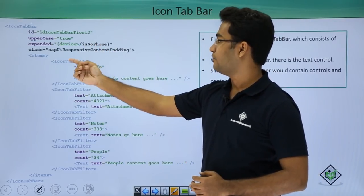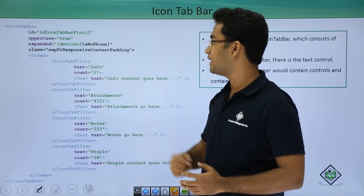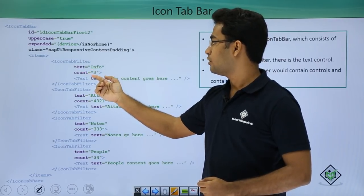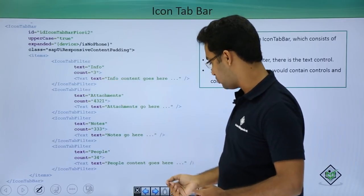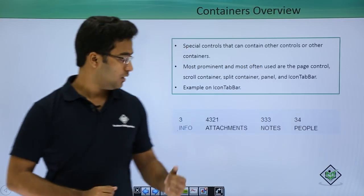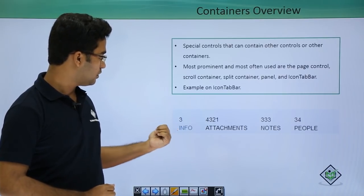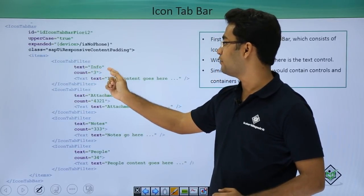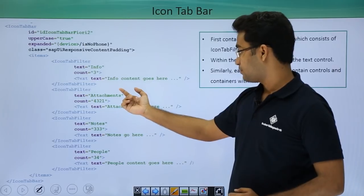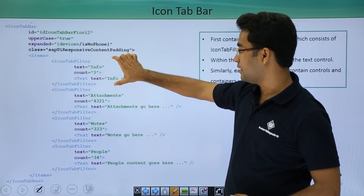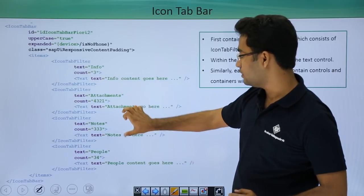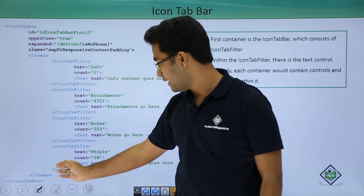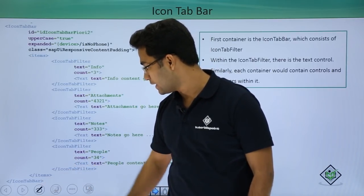In the icon tab bar I have this items aggregation, and within items I have IconTabFilter. IconTabFilter provides two properties: text and count. In text I have used 'info' and the count is 3 — so in the previous slide the text was 'info' and the count was 3. Similarly, I have provided other 3 or 4 icon tab filters, then closed the icon tab filter, items, and finally the icon tab bar.